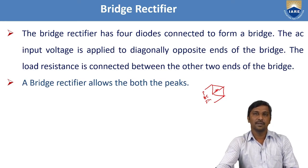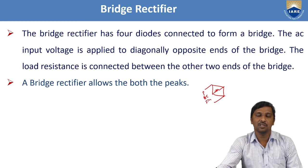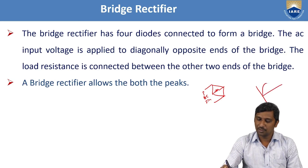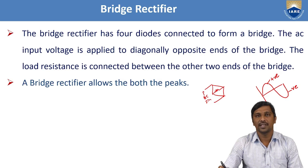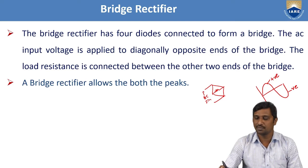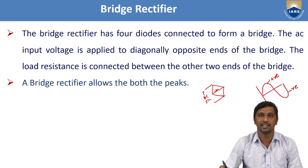The bridge rectifier also allows both peaks. In a given AC signal there are two types of peaks: positive and negative. The half-wave rectifier allows only one peak — either positive or negative. The full wave rectifier allows both peaks. Similarly, the bridge rectifier also allows both peaks of the given input signal — positive as well as negative.